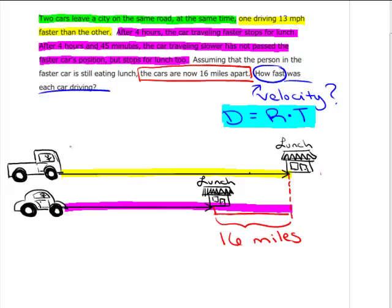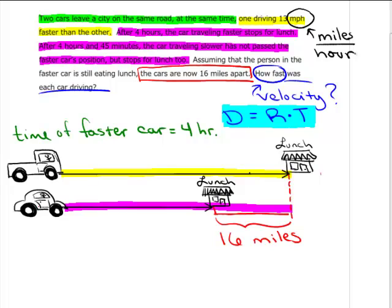It's a good idea to have a plan. What are you going to do to solve this problem? I'm going to set the distance of the faster car equal to the distance of the slower car plus that additional 16 miles. So in order to represent this as a distance, I could use my formula distance is equal to rate times time. They did give me the time, and I could write the rate as a variable expression. So let's do that. First, let's label what we know. The time of the faster car is four hours.